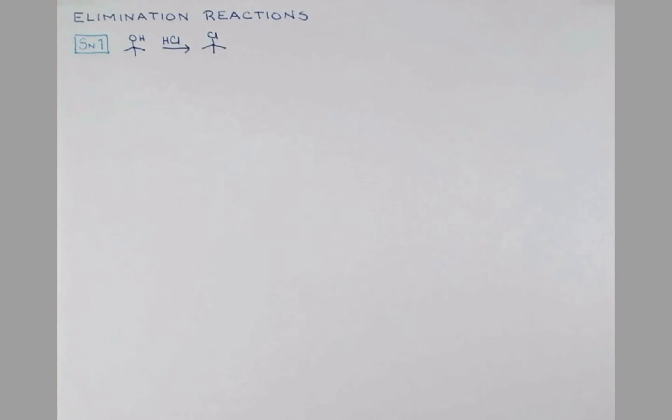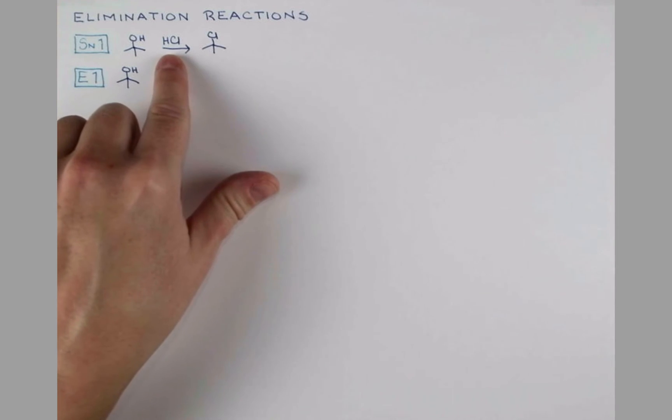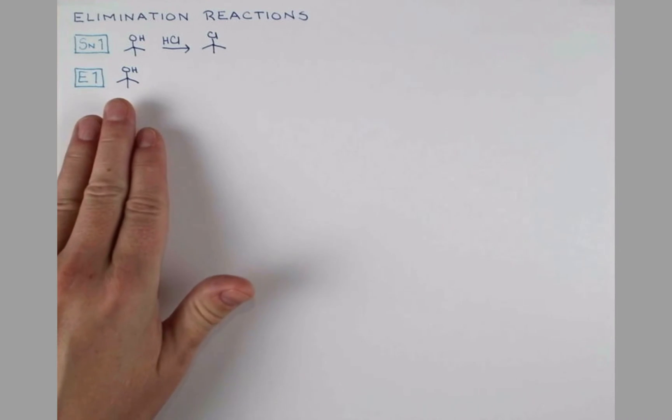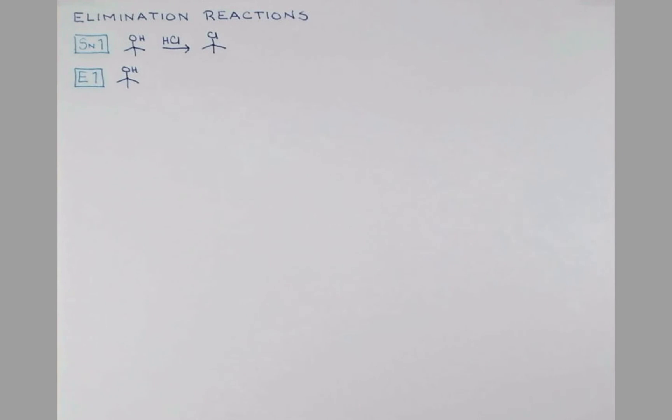This reaction competes with an elimination reaction called E1. Let's take our same alcohol, but instead of treating it with an acid that contains a good nucleophile—Cl- is a good nucleophile—let's treat it with an acid that has a conjugate base that's not very nucleophilic. Sulfuric acid will do.